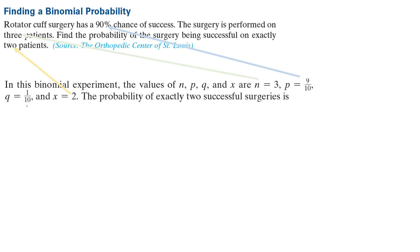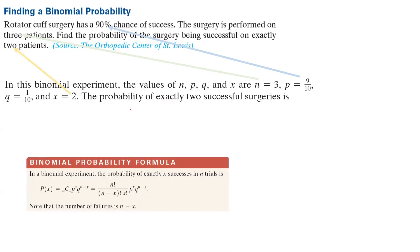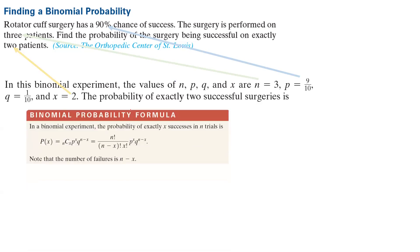The question asks us to find the probability of exactly two successful surgeries. We're going to use the binomial probability formula. In this formula, you identify n, X, P, and Q, then do the calculation.